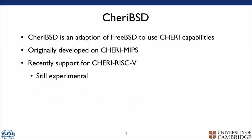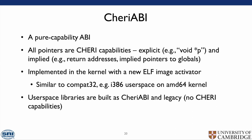What is the CheriBSD Morello project? CheriBSD is an adaptation of FreeBSD to use CHERI capabilities, originally developed on the CHERI MIPS platform with recent experimental support for RISC-V. It includes the CHERI ABI — a pure capability ABI where all pointers are CHERI capabilities, both explicit ones like void* p and implicit ones like the return address. It is implemented in the kernel with an ELF image activator, similar to how FreeBSD does Compat32 — for example, i386 userspace on an AMD64 kernel. Userspace libraries are built both as CHERI ABI and as legacy without CHERI capabilities, while binaries are built entirely as CHERI ABI where possible. For more information on CHERI ABI, Brooks Davis gave a talk at BSDCan last year.